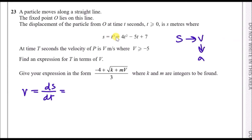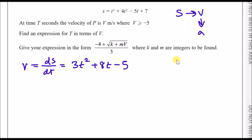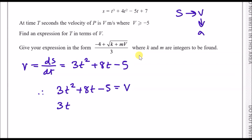So we differentiate the displacement equation to get velocity: V equals dS/dt. Dropping the power down and subtracting 1 each time: the T³ term gives 3T², the next term gives 8T, and the constant term minus 5 means just minus 5 (a lone T becomes a constant, and a constant disappears). So V = 3T² + 8T − 5. Rearranging: 3T² + 8T − 5 − V = 0.